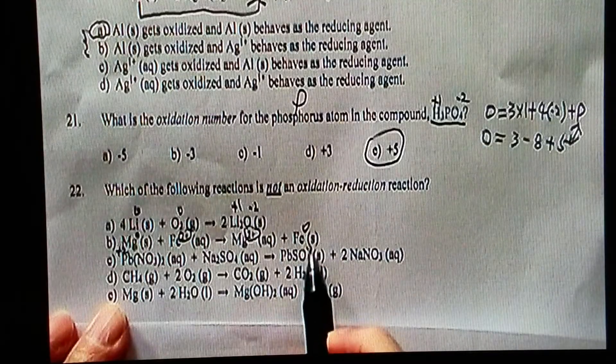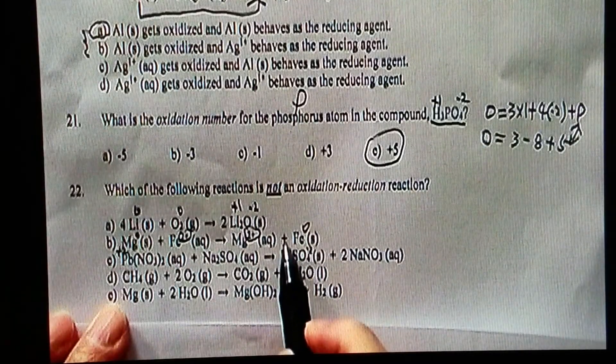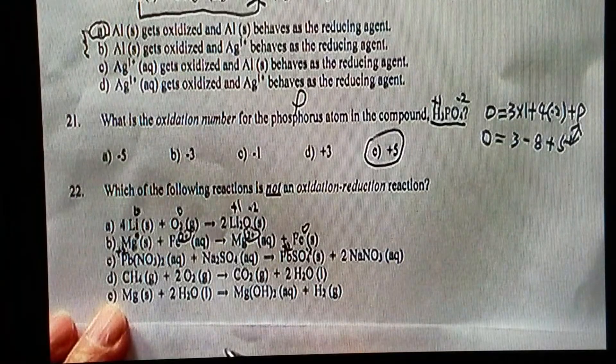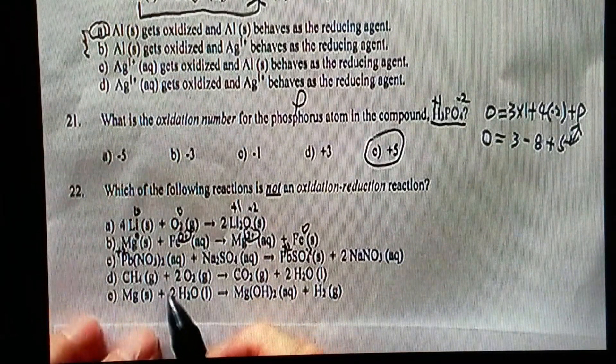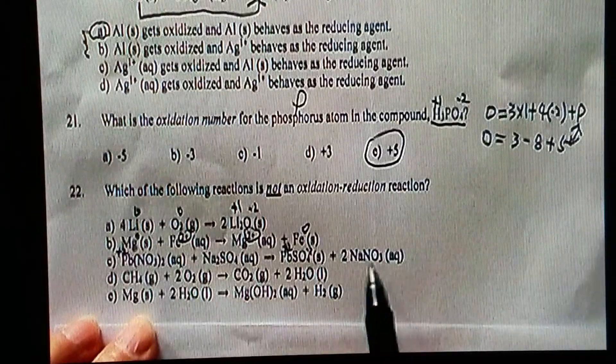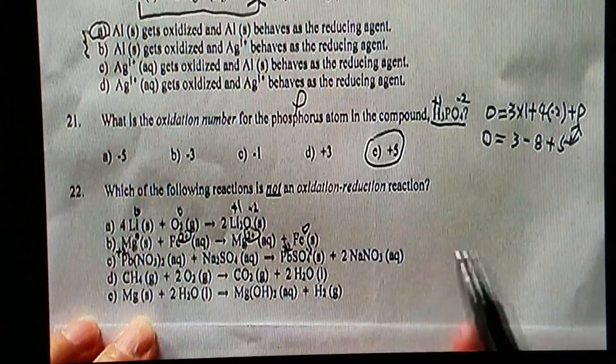Therefore, lead, still two plus. No oxidation number change, that's for lead. So for nitrogen, that's nitrate on the left-hand side, also nitrate on the right-hand side, no oxidation number change.